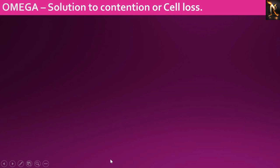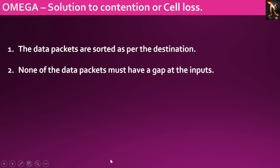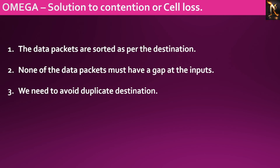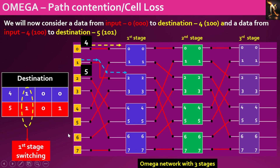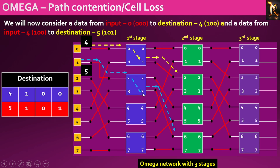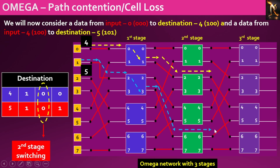Let's explore potential solutions to address path contention and the resulting cell loss. The proposed procedure involves sorting the data packets based on their destinations, ensuring that there are no gaps at the inputs for any of the data packets, and avoiding duplicate destinations to prevent conflicts and path contention. The packets are applied at the input ports following a sorted order, ensuring there are no gaps and avoiding duplicate addresses.